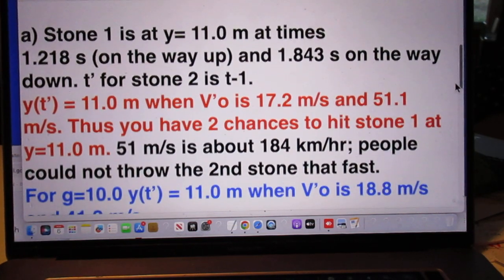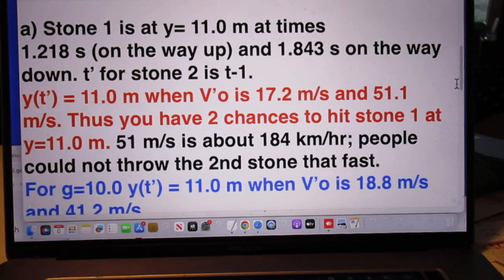So stone 1 is at a y position of 11.0 meters at times 1.218 seconds when the stone is on the way up and 1.843 seconds when the stone is on the way down.